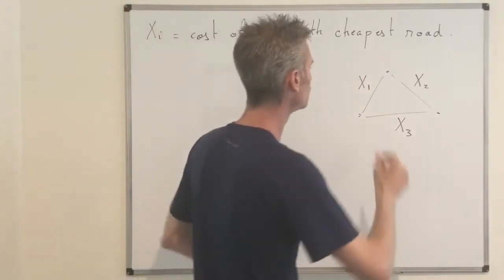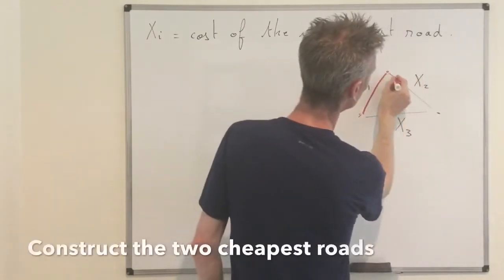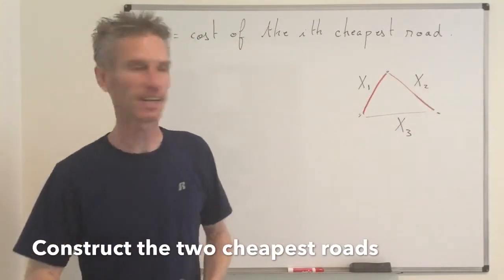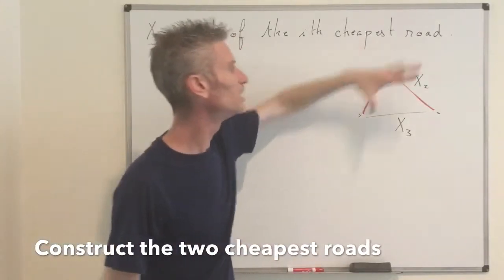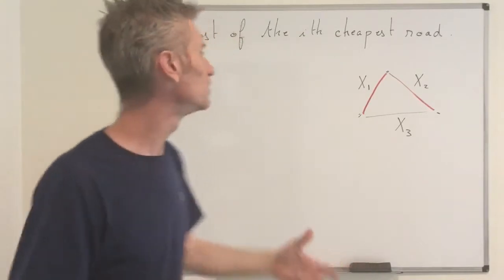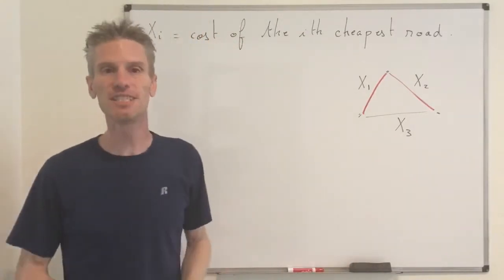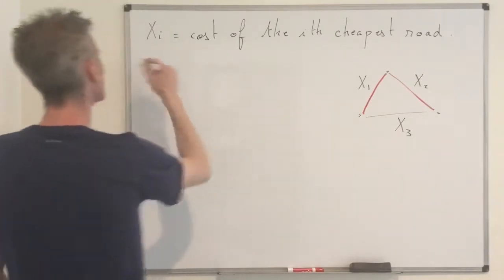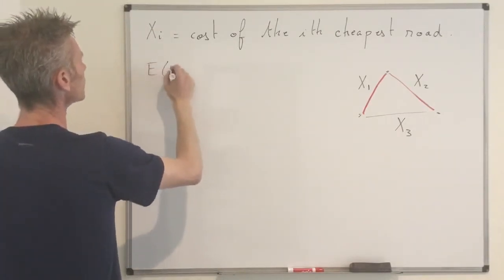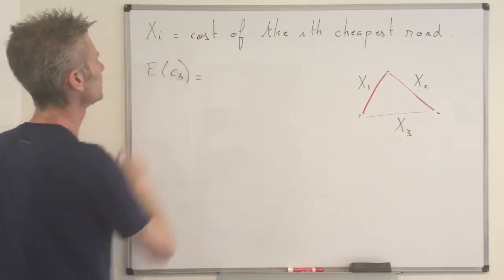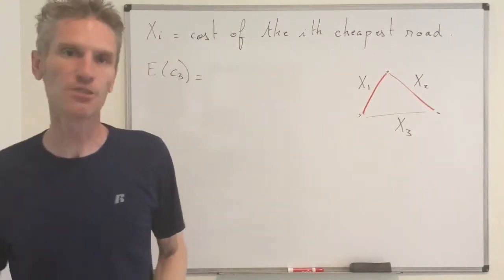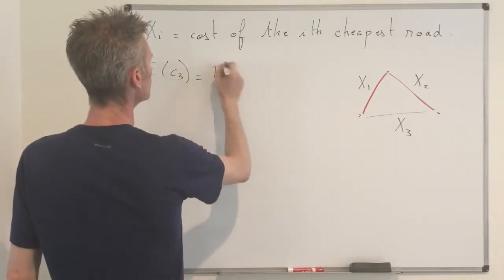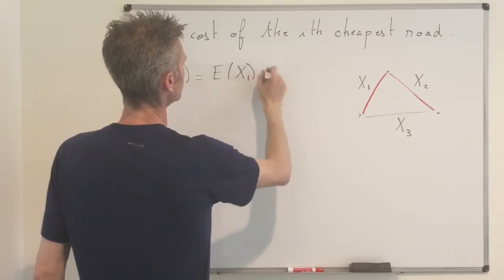What you want to do is build the two cheapest roads so that you can go from any vertex to any other vertex with minimal cost. The expected value of C2 is clearly equal to the expected value of X1 plus X2, and by linearity of expectation, that equals the expected value of X1 plus the expected value of X2.